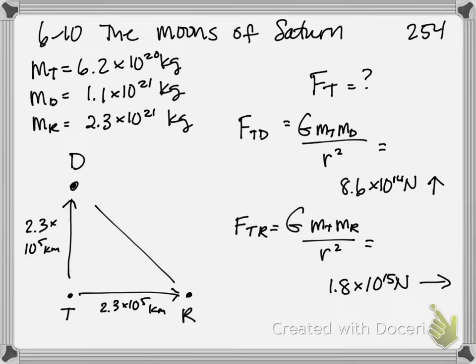So again, we've got Dione pulling it up. Rhea pulling it to the right. Luckily, this is an easy vector addition problem because these vectors are perpendicular to each other. So you can use the Pythagorean theorem to find that the net force on Tethys due to these two other moons is 2.0 times 10 to the 15th newtons. And the angle is 26 degrees as this has been drawn.